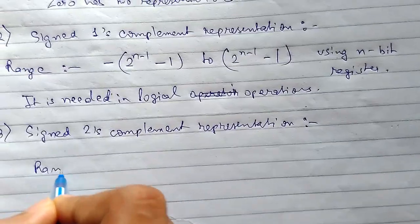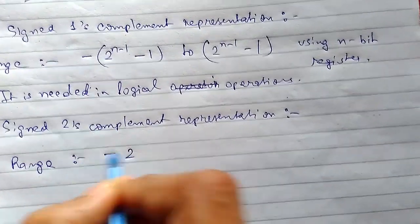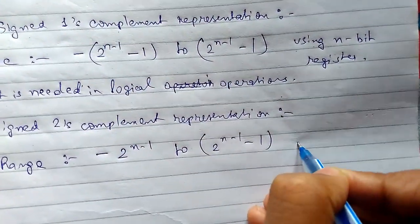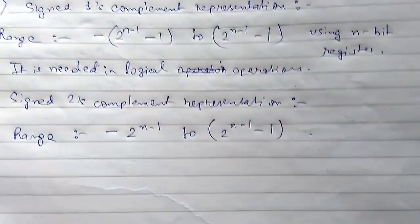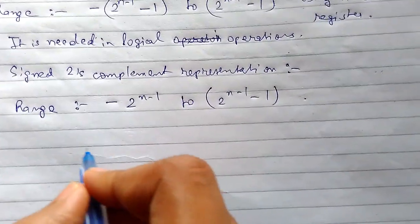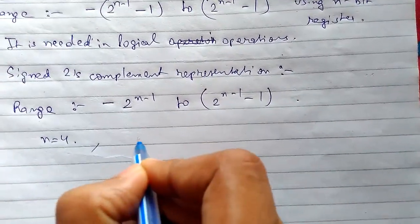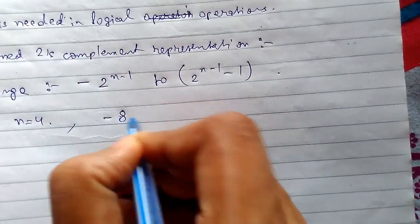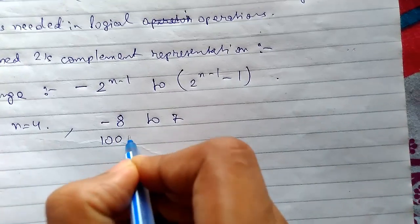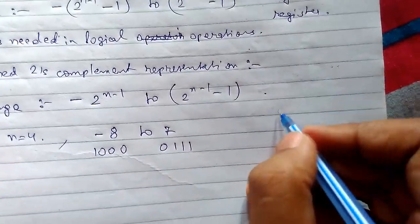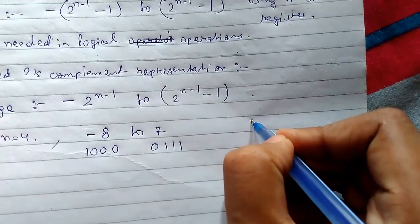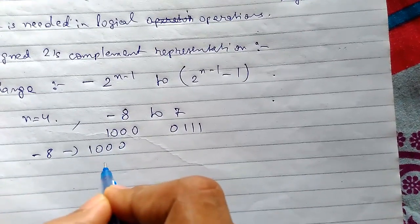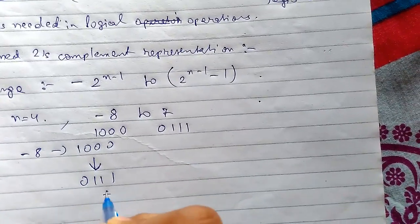Number three is signed two's complement representation. The range is from minus 2 to the power n minus 1, to 2 to the power n minus 1, minus 1, using an n-bit register. For example, with n equals 4, the range is minus 8 to 7, or 1 0 0 0 to 0 1 1 1. For minus 8, which is 1 0 0 0, taking one's complement gives 0 1 1 1, then adding 1 gives 1 0 0 0.